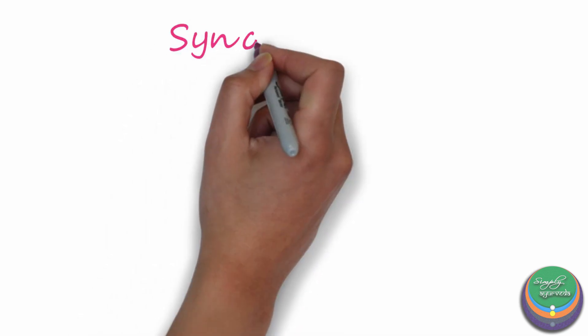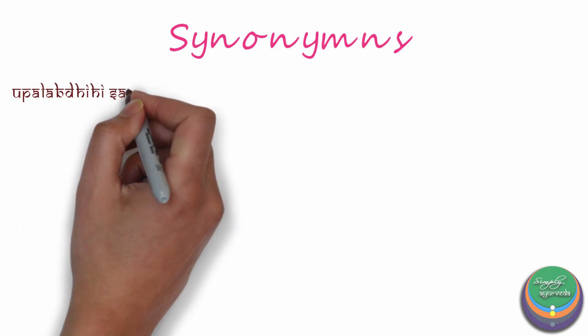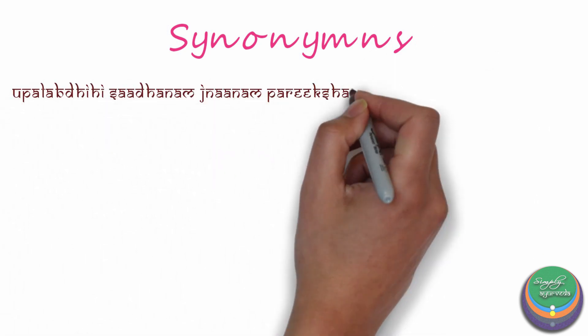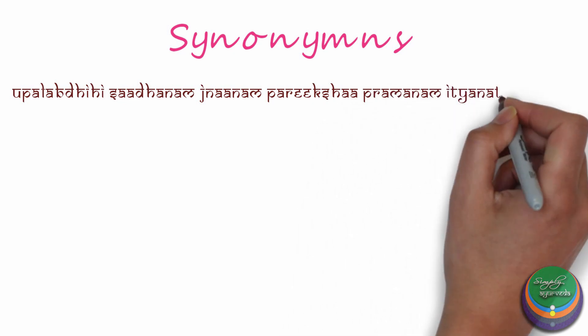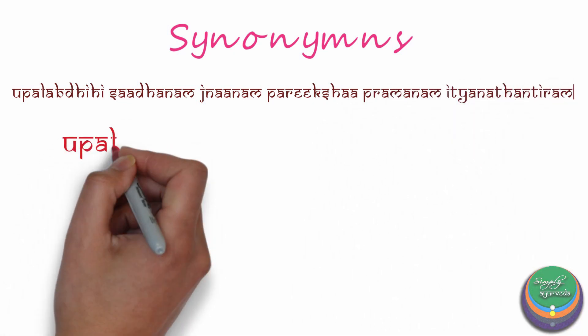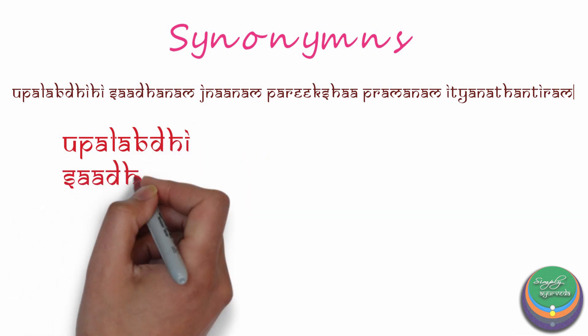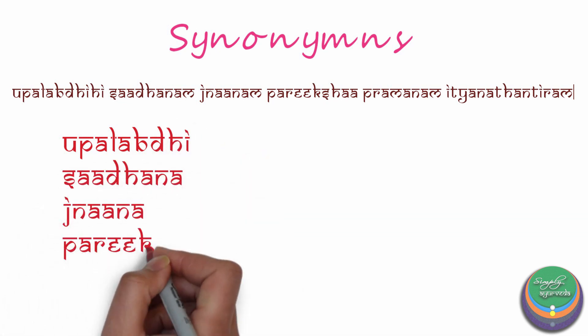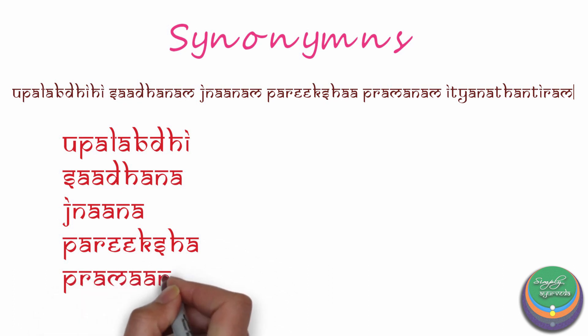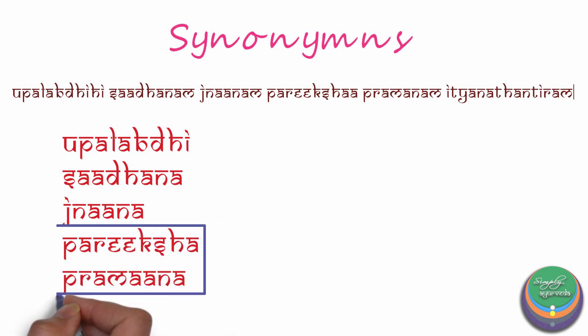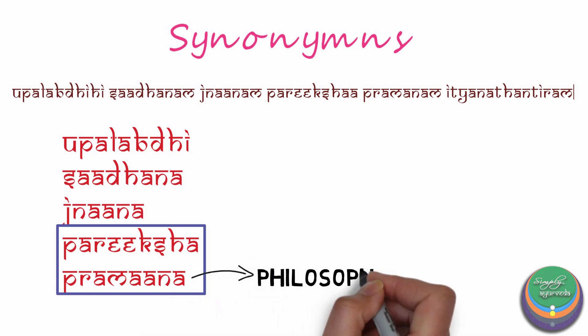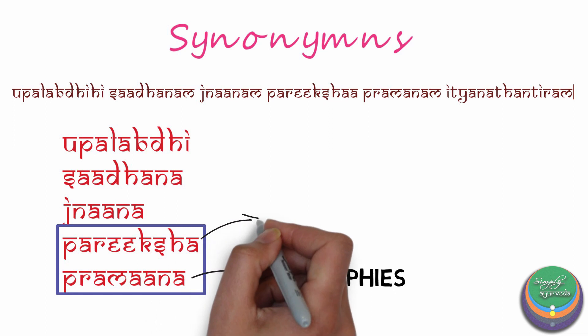The synonyms of Pariksha are: Upalabdhi, Sadhanam, Jnana, Pariksha, and Pramanam. Of these, Pariksha and Pramana are widely used in Ayurveda and both convey the same meaning. The term Pramana is used more in the Darshanas, whereas the word Pariksha is used by Acharyas in the texts of Ayurveda.